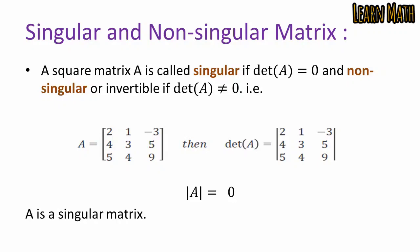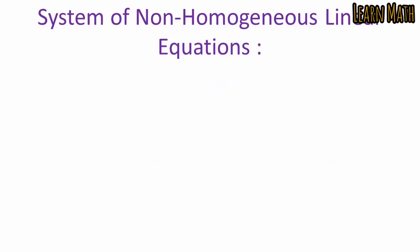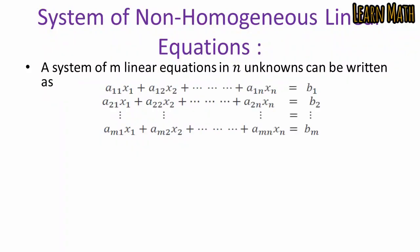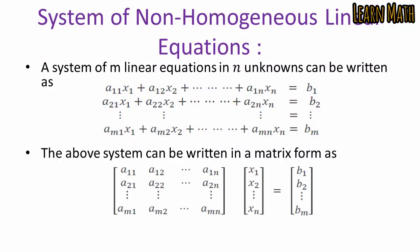A system of non-homogeneous linear equations with m equations and n unknowns can be written as: a11·x1 + a12·x2 + ... + a1n·xn = b1, a21·x1 + a22·x2 + ... + a2n·xn = b2, and so on. This system can be written in matrix form as AX = B, where A is the coefficient matrix, X is the column vector of unknowns, and B is the column vector of constants.